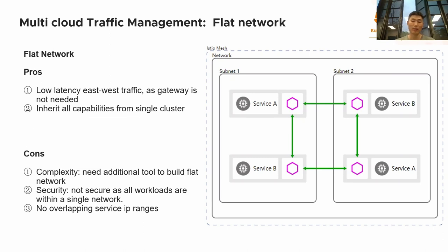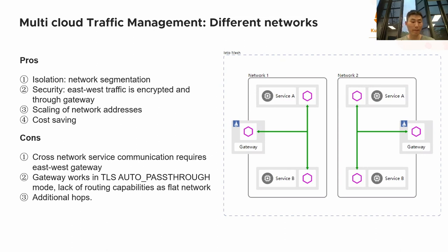Compared with flat network, let's look at different networks. Service meshes can span different networks — each cluster resides in its own network, and pods cannot talk directly to pods in other clusters. It provides better isolation: each cluster is independent and more secure. Cross-cluster communication must go through an east-west gateway, so the challenge is cross-cluster service communication. The east-west gateway works in TLS auto-passthrough mode, which requires a network filter — SNI cluster — to map the SNI cluster from the TLS handshake to the cluster names. The gateway then redirects the request to the destination cluster.